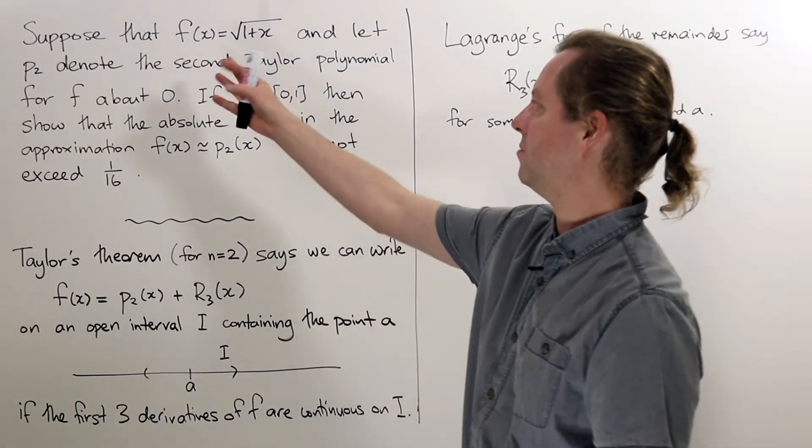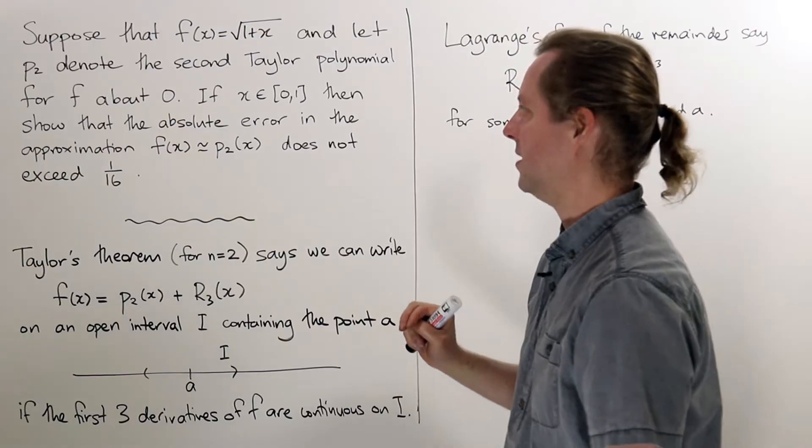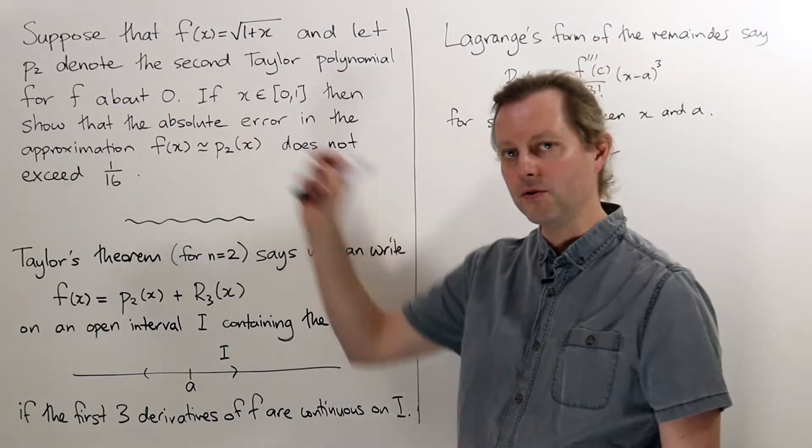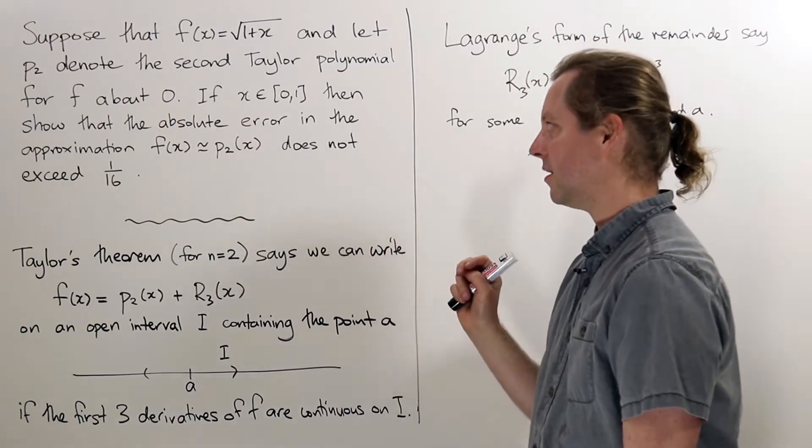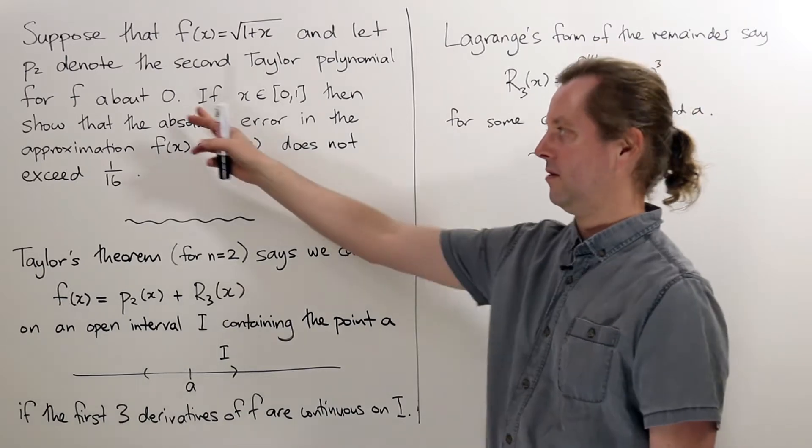The question says suppose that we've got f(x) which is the square root of 1 plus x, and p2 is the second Taylor polynomial for f about 0.